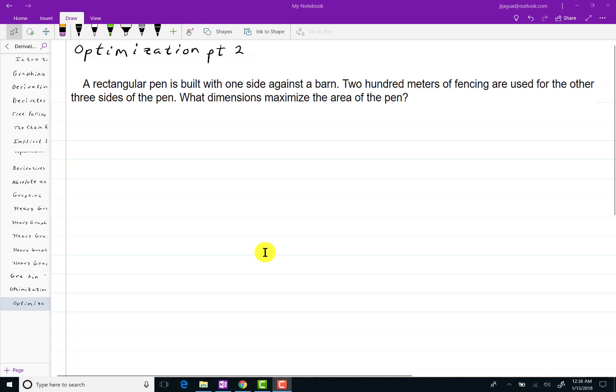So what I probably would do is draw a picture first to get an idea of what I'm dealing with. So it says one side is against the barn and then there's three other sides of the pen. So maybe something like this. This part right here will be the barn. And then I'll have fencing something like this.